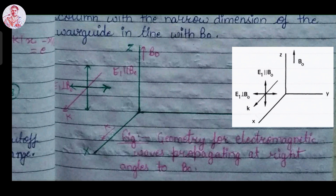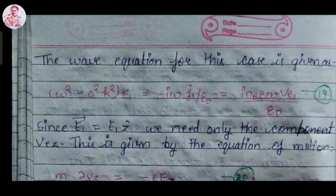Now we will derive the dispersion relation of the electromagnetic wave where E vector is parallel to vector B₀. The wave equation in this case is given by: (ω² − c²k²) E⃗ = −iω J⃗ / ε₀, which after substituting the value of current density J⃗ gives iN₀eω v⃗_e / ε₀. Let's call this equation number 19 — this equation was derived earlier in the lecture on electromagnetic waves under unmagnetized plasma.